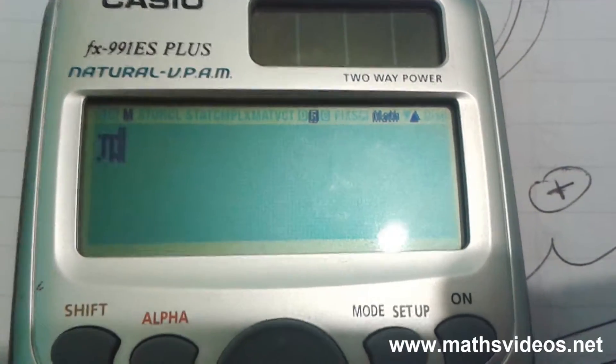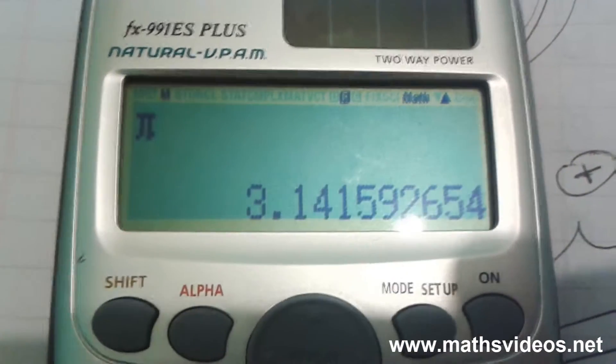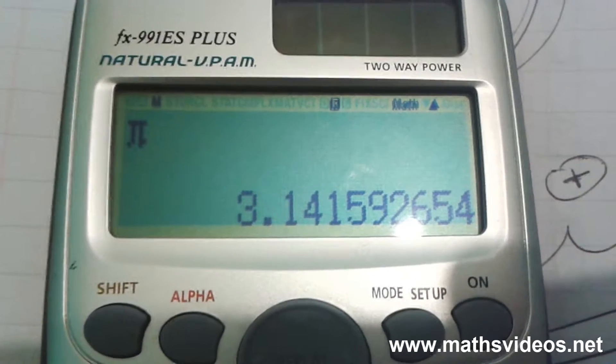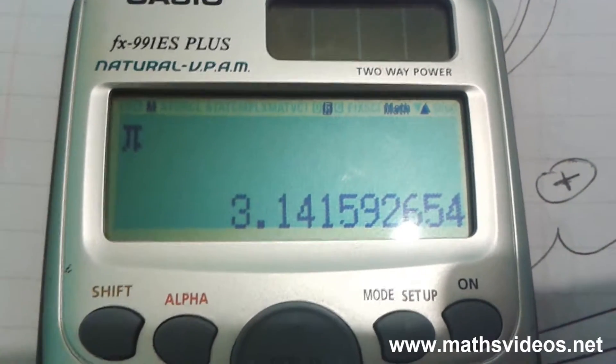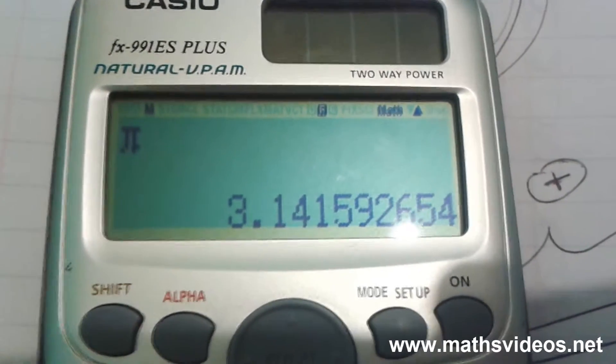So we know that pi is in fact equal to 3.141592654 etc.